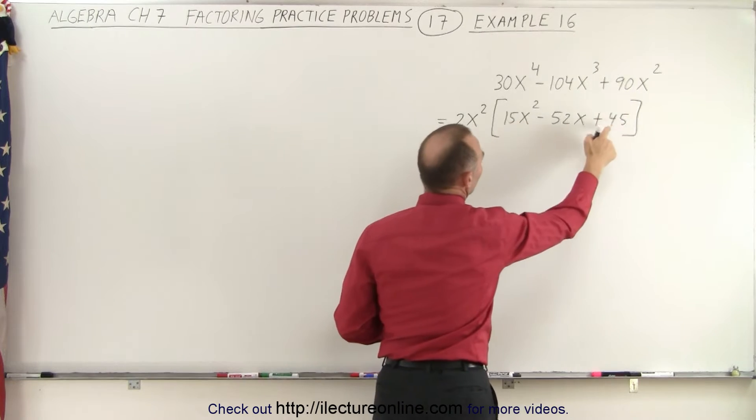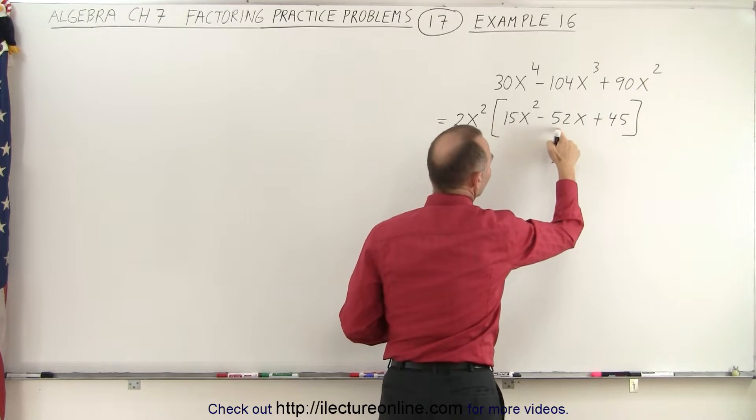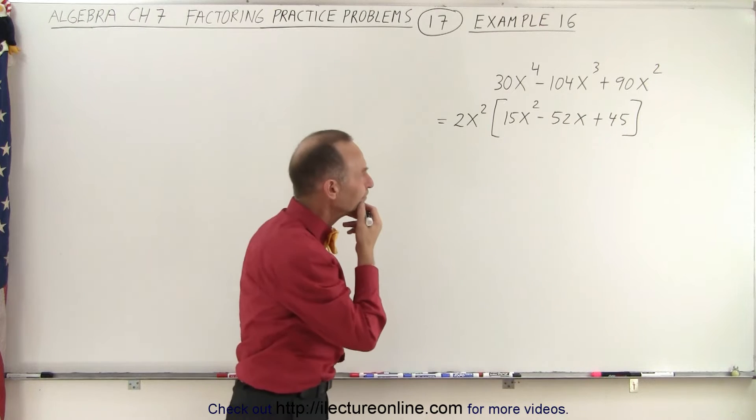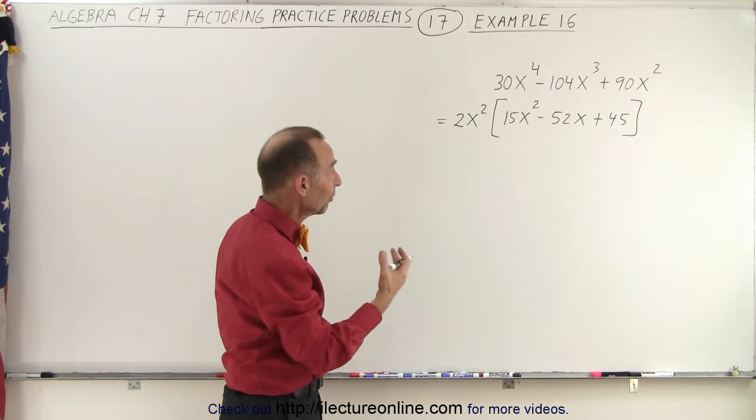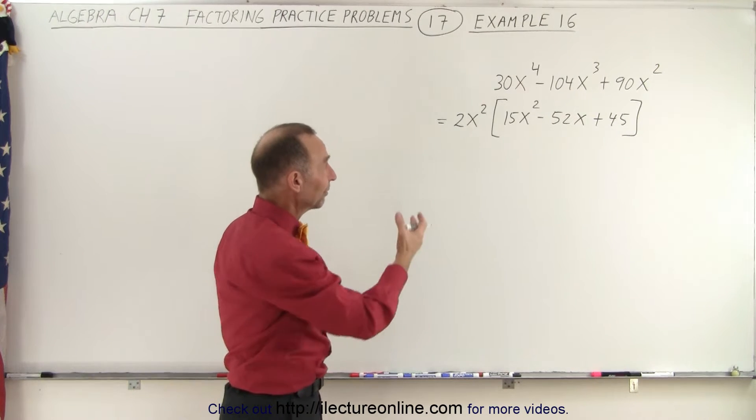Now notice that these two numbers are divisible by 3, but 52 isn't. So that means that this is the simplest we can make it before we're going to try to factor that.